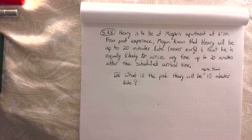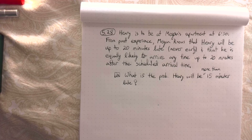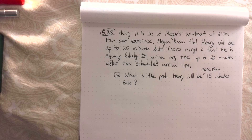This is problem 5.28 from the review. Henry is to be at Megan's apartment at 6:30. From past experience, Megan knows that Henry will be up to 20 minutes late, never early, and that he is equally likely to arrive anytime up to 20 minutes after the scheduled arrival time.